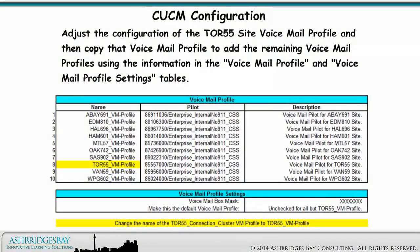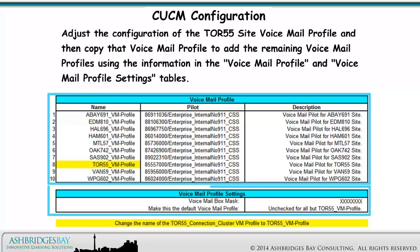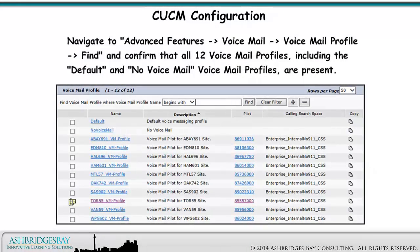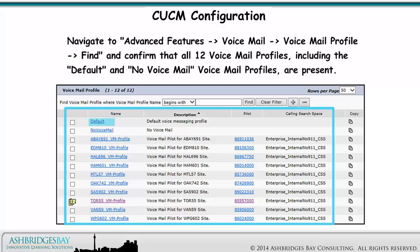Adjust the configuration of the Toronto 55 site voicemail profile and then copy that voicemail profile to add the remaining voicemail profiles using the information in the Voicemail Profile and Voicemail Profile Settings tables. Navigate to Advanced Features, Voicemail, Voicemail Profile, Find, and confirm that all 12 voicemail profiles, including the default and no voicemail voicemail profiles, are present.